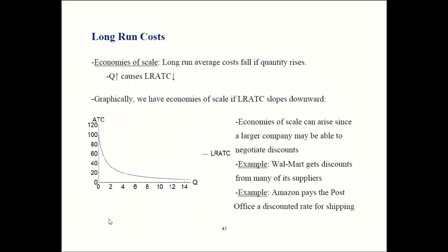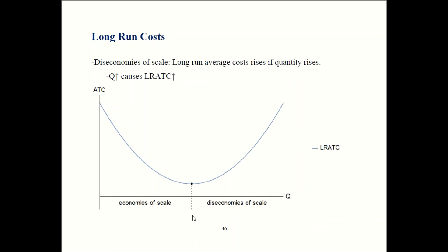That can help out consumers as well. Because Walmart gets discounts from its suppliers, it can offer very low prices. Similarly, Amazon can charge less for shipping to its customers because of their deal with the post office, so consumers benefit too. Now, not all companies have economies of scale. There's also the opposite, called diseconomies of scale, which means long run average costs go up when you produce more. Some firms might have a little bit of both — economies of scale over some range where average total costs are going down, and then past a certain point, average total costs start going up.